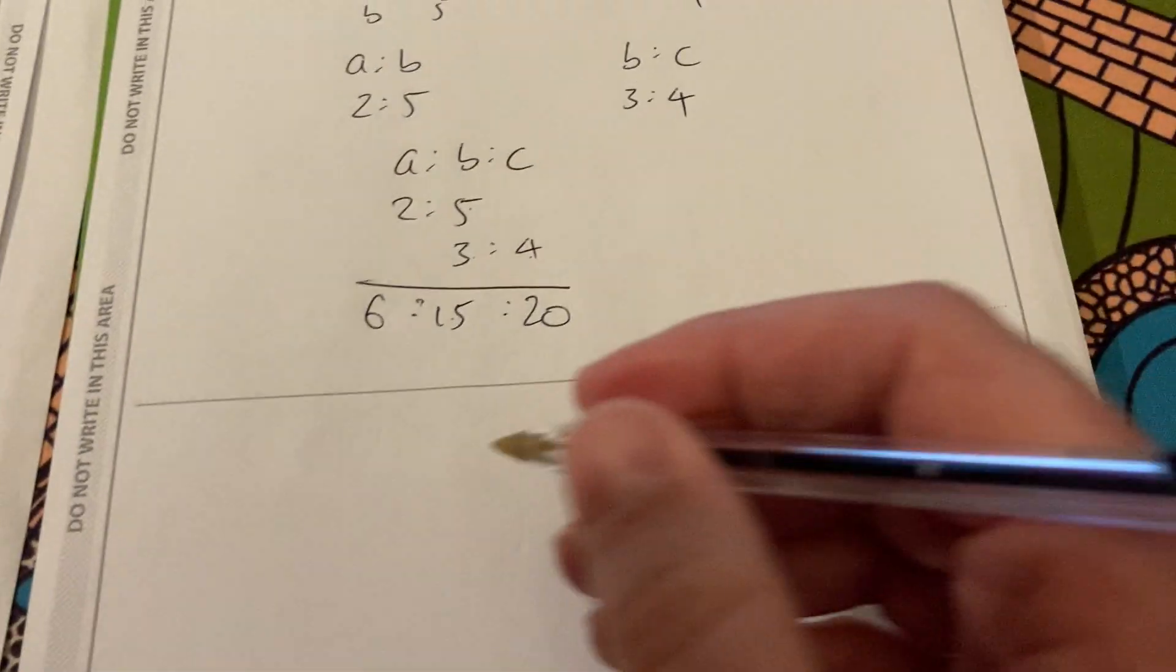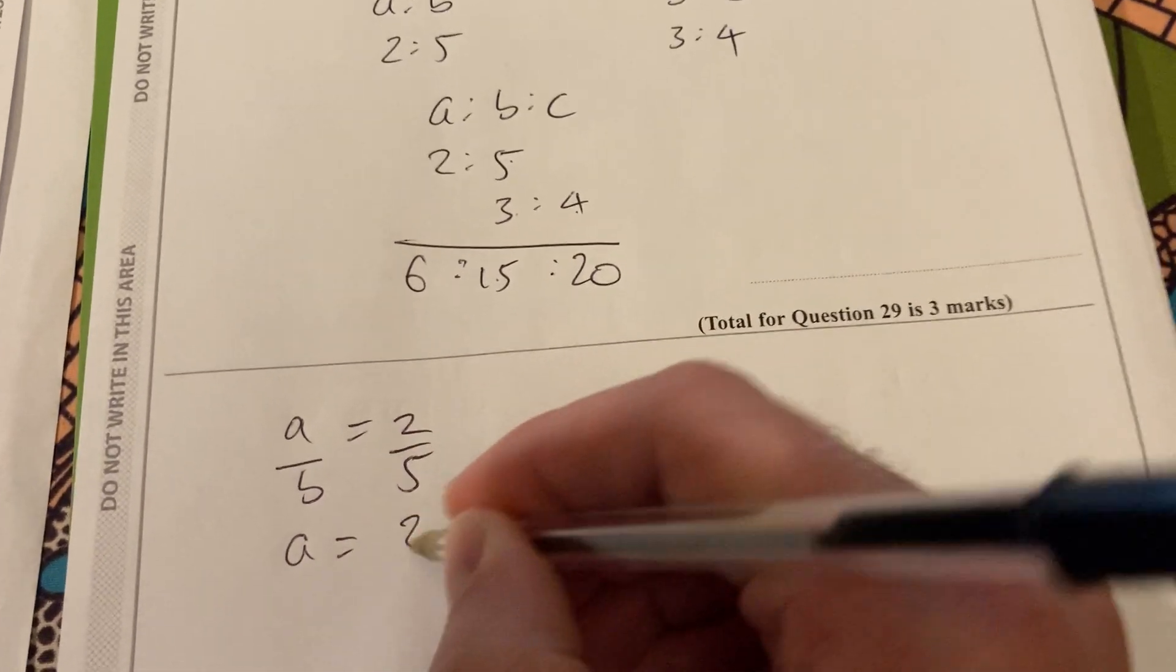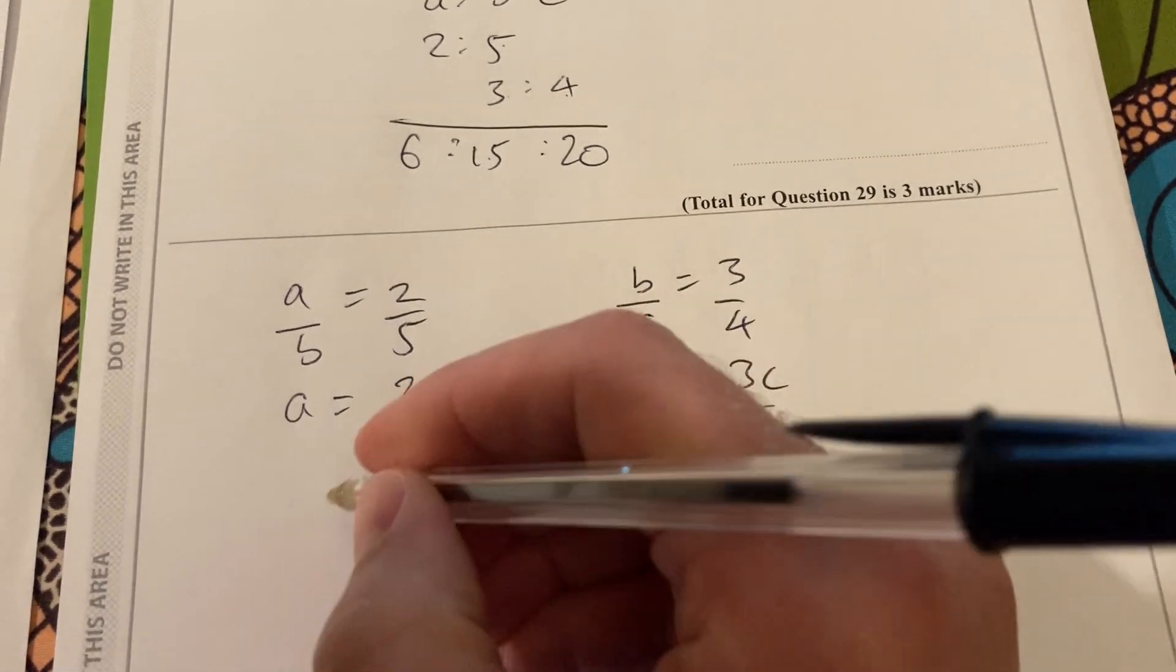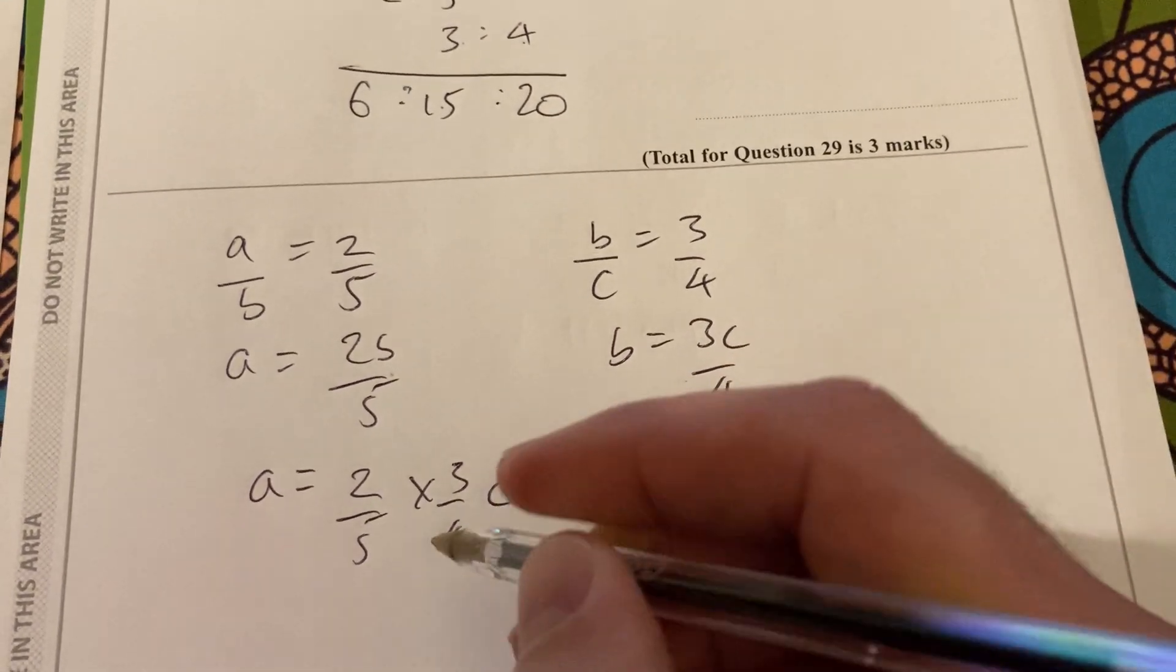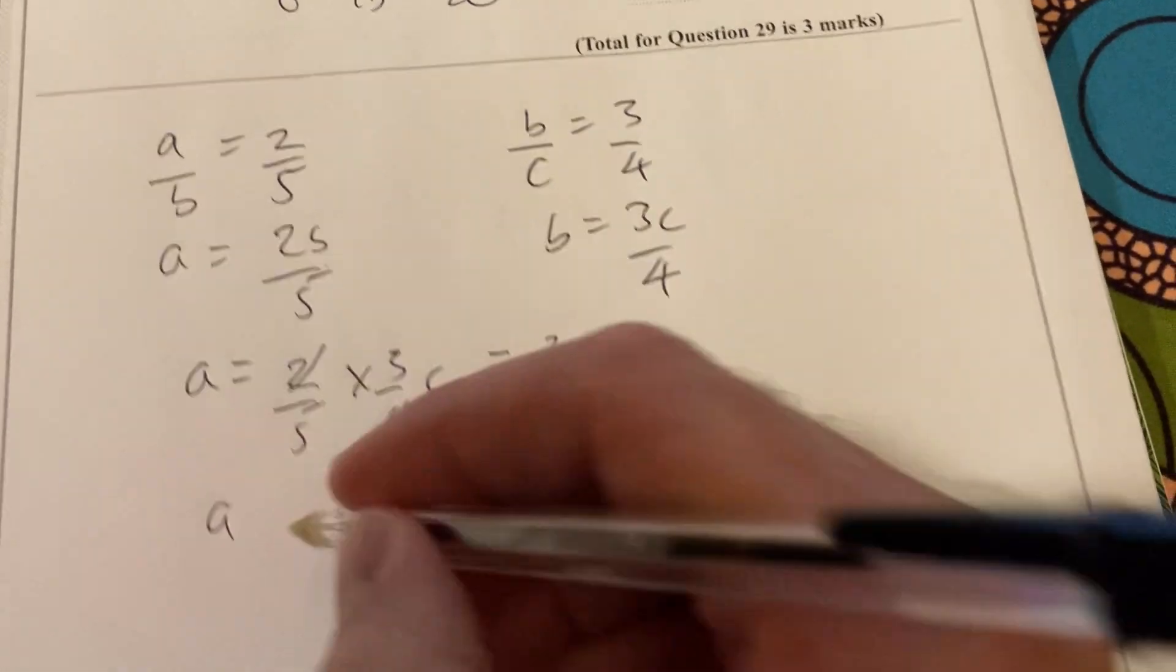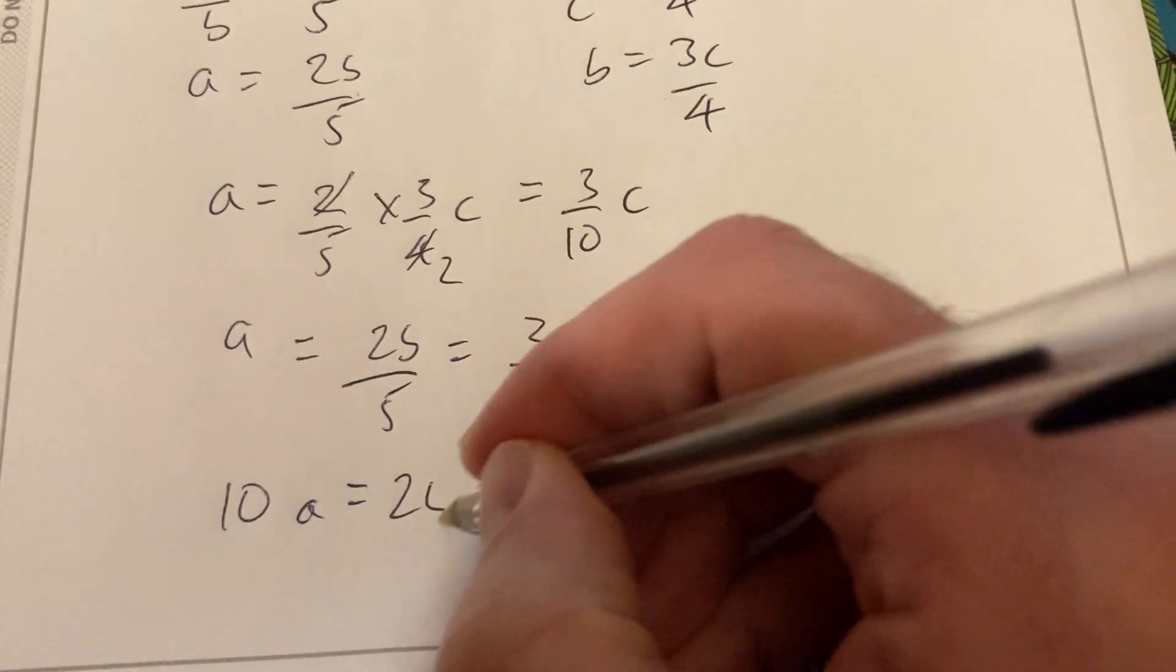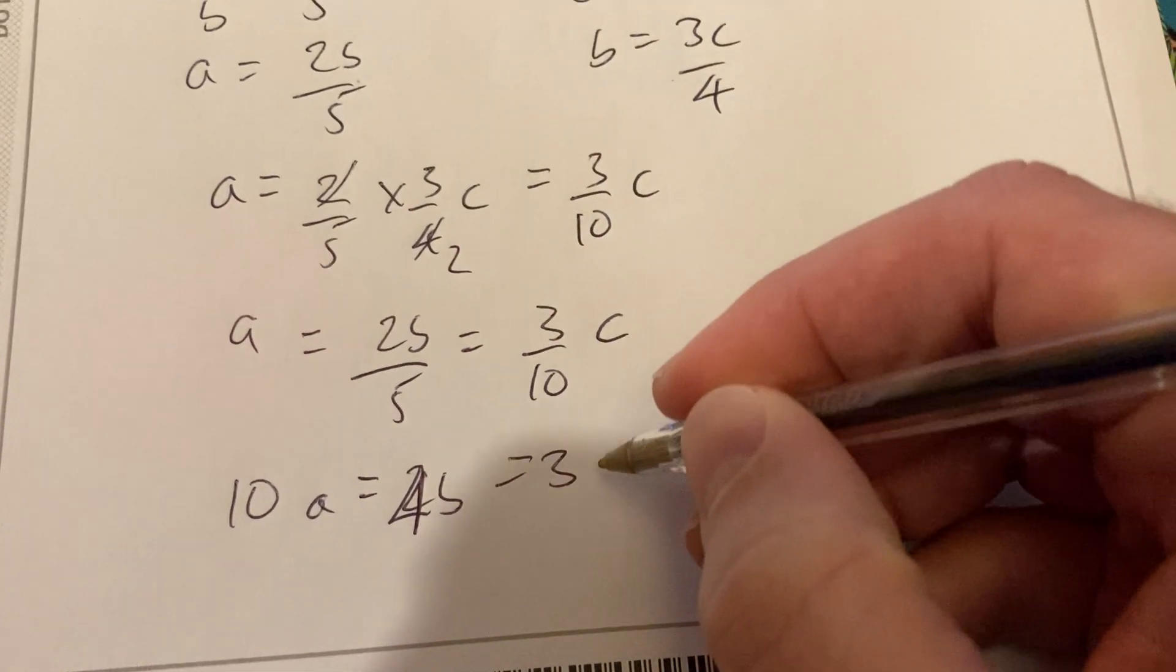So there I have A to B to C is 6 to 15 to 20. There's a slightly different way of doing this, which is fractions. So if A over B is 2 fifths, then A is equal to 2B over 5, and B over C is 3 quarters, then B is equal to 3C over 4. I'm going to substitute that into here. So A is equal to 2 fifths times 3 quarters C, so it's equal to, cancel that, 3 tenths C. So then I have A equals 2B over 5, which equals 3 tenths of a C. Multiply through by 10, so 10 of A is the same as 2 of B, which is the same as 4 of B, so multiply through by 10, 4 of B, the same as 3 of C.